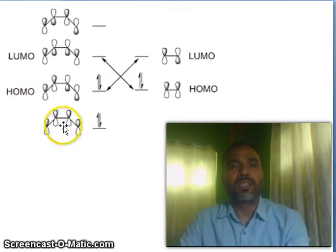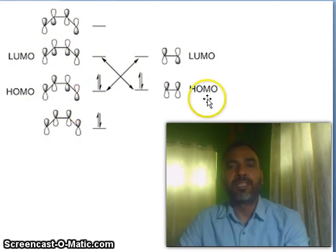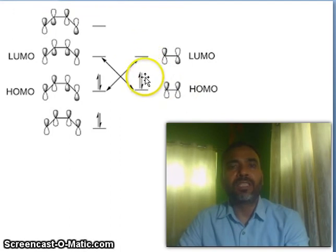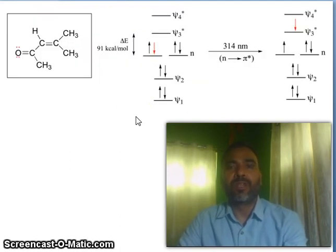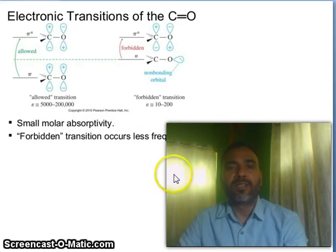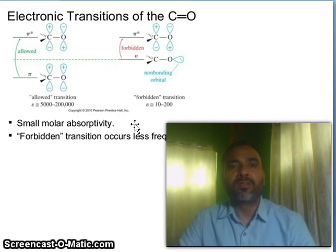Now, this is the HOMO and this is the LUMO in the case of butene, and this is the HOMO and LUMO in the case of ethene. Look at this energy level diagram. There is a problem outside, so I will stop here. I hope this video will be helpful to you. Thanks for watching.